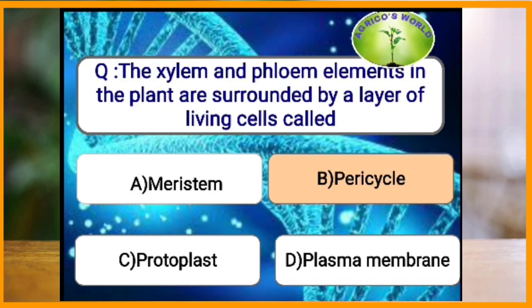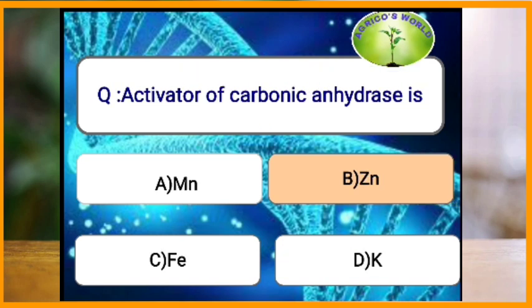The xylem and phloem elements in the plant are surrounded by a layer of living cells which are called what? The xylem and phloem are surrounded by the living cells called the pericycle. What is the activator of carbonic anhydrase? Zinc is the activator of carbonic anhydrase.